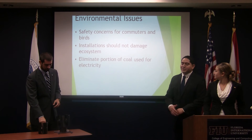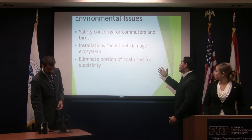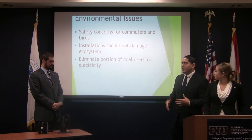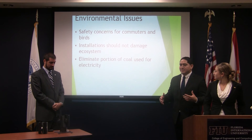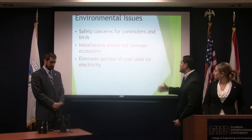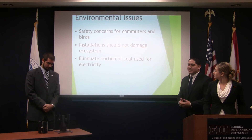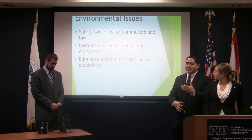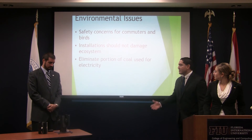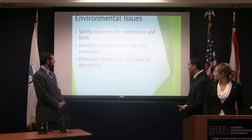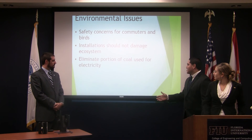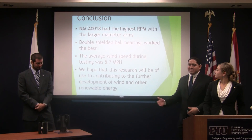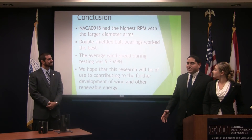For our vertical axis wind turbine, we wanted to make it safe for both commuters and birds, so we incorporated that into our design — something that will meet the criteria for both. The installations also should not damage the ecosystem. We try not to interfere with anything, so we're putting them on the actual poles that are already there. And we're obviously trying to eliminate the portion of coal being used in the world, implementing more green energy.